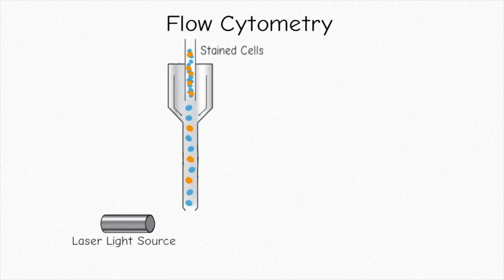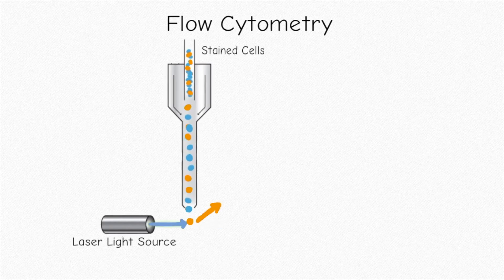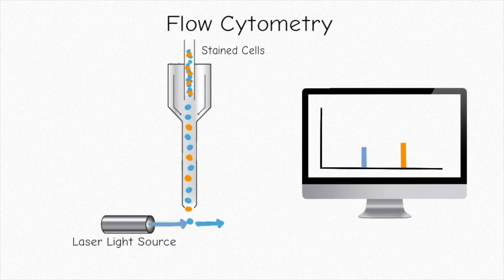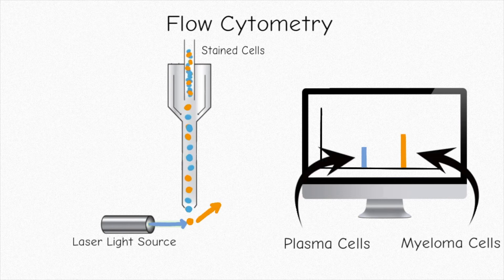In flow cytometry, your cells are stained and pushed through a machine one by one. A light is shined at these cells, and a detector records the amount of light that is emitted from these cells and records it on a computer. Flow cytometry can distinguish between normal plasma cells and myeloma cells.